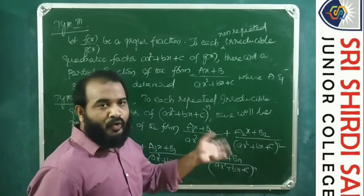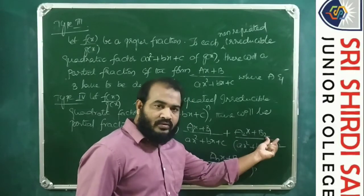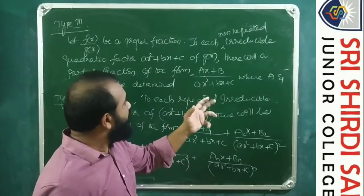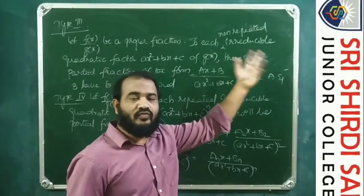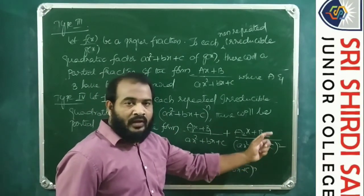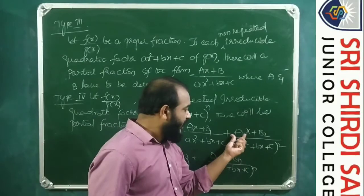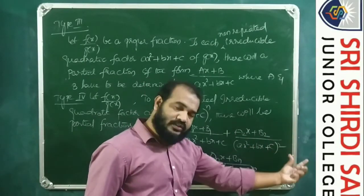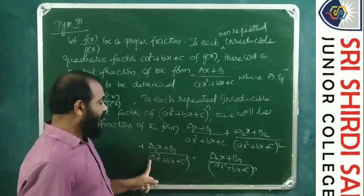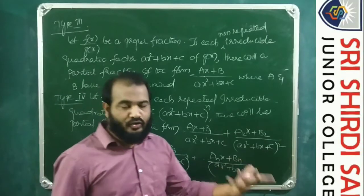In practice, the problems will give a finite number of repeated quadratic factors — maximum cubed. So for a factor repeated 3 times, we use (Ax+B)/(ax²+Bx+C), (Cx+D)/(ax²+Bx+C)², and (Ex+F)/(ax²+Bx+C)³, where A, B, C, D, E, F are to be determined. Now let us start Exercise 7B.